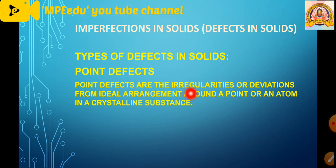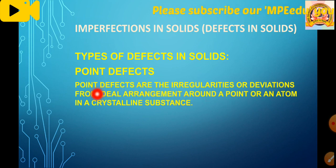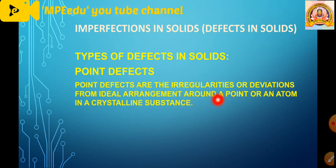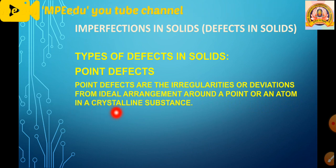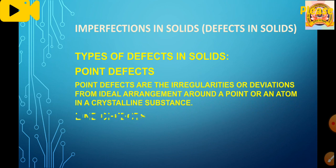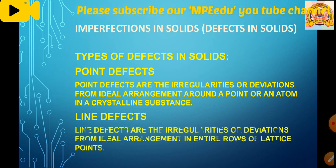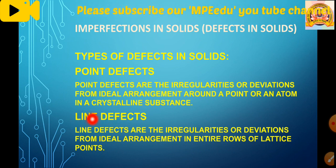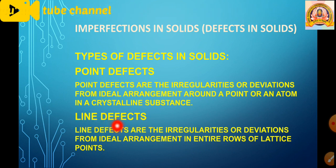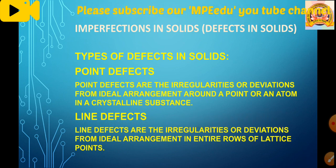Solid defects are classified mainly into two types: one is point defects and another one is line defects. Point defects — the word itself says that around any one lattice point or particle, there is a deviation, irregularity, or missing of a particle. Point defects are irregularities or deviations from the ideal arrangement around a point or atom in a crystalline substance.